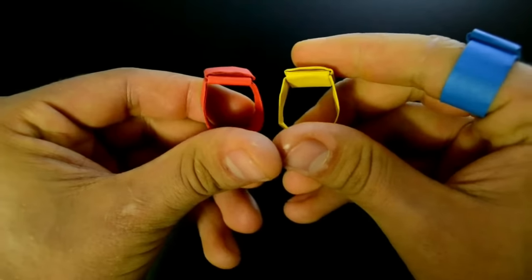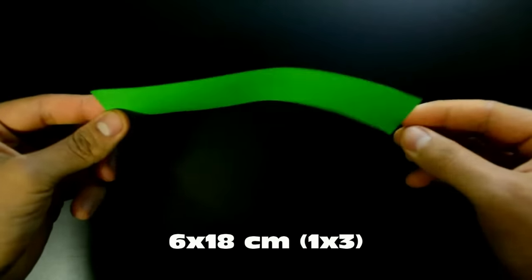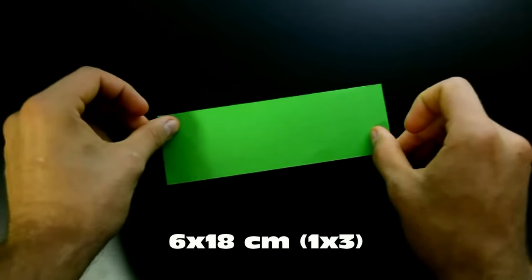To make this model we need a rectangle of paper with the proportions 1 by 3. In this video I'll use 6 by 18 centimeters, can vary according to the finger.